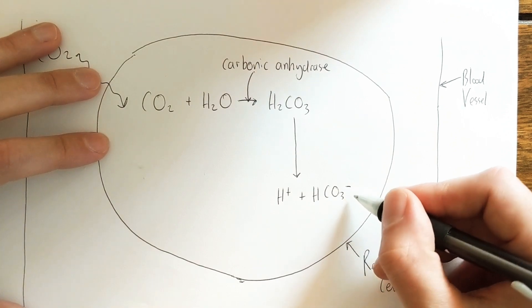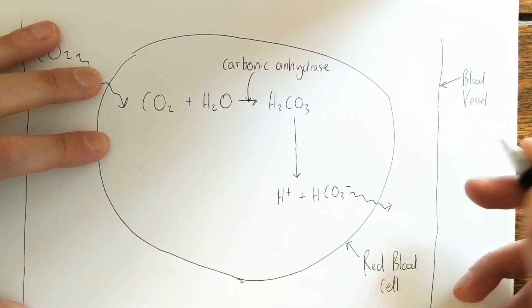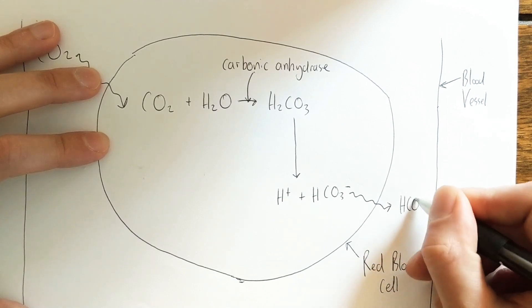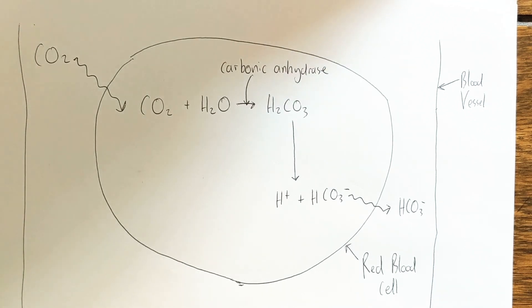The carbon dioxide is actually transported as this hydrogen carbonate ion, and that will diffuse back into the blood plasma. That is the main way that carbon dioxide is transported in the bloodstream.